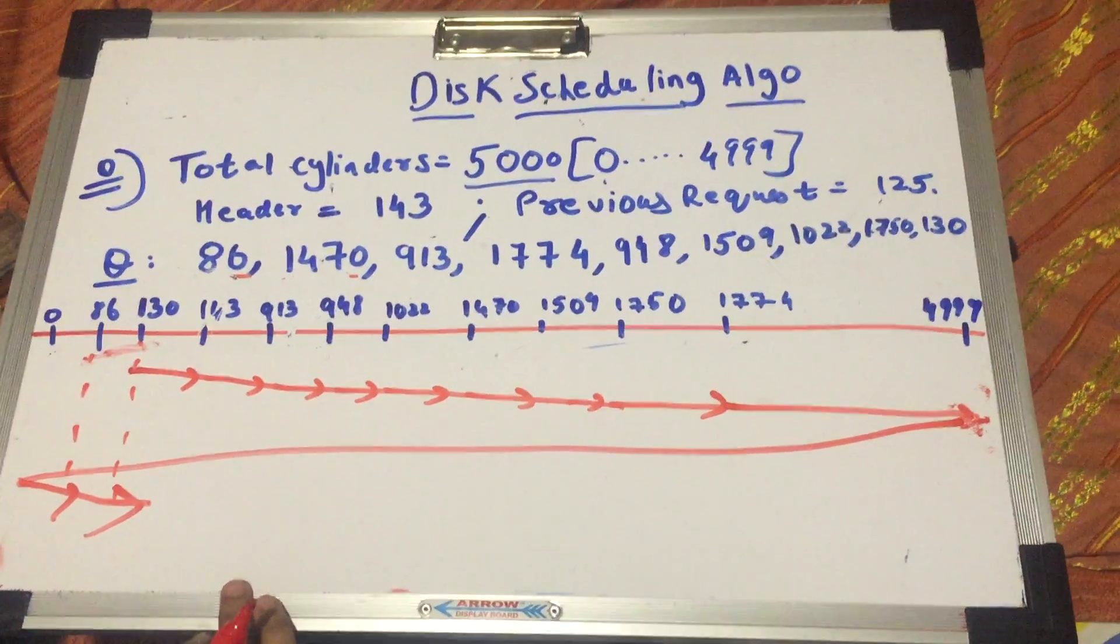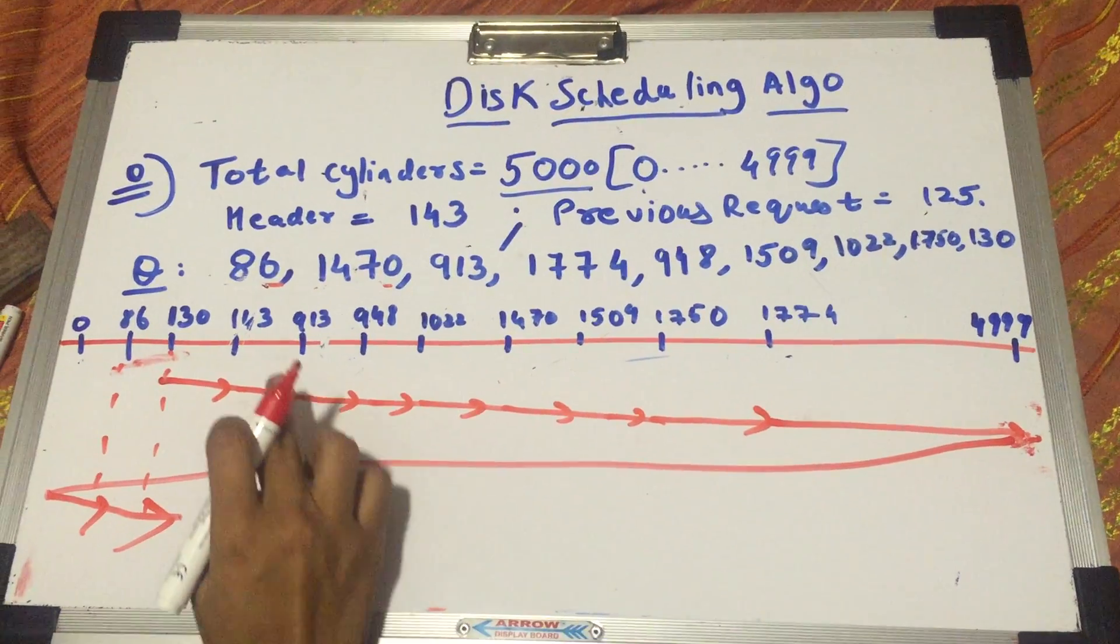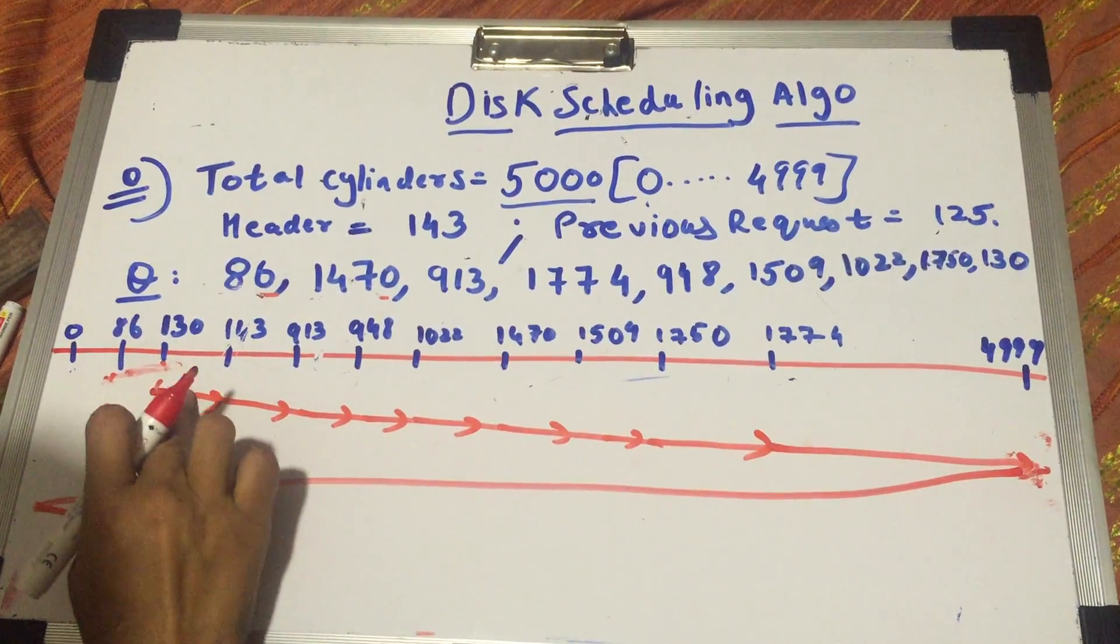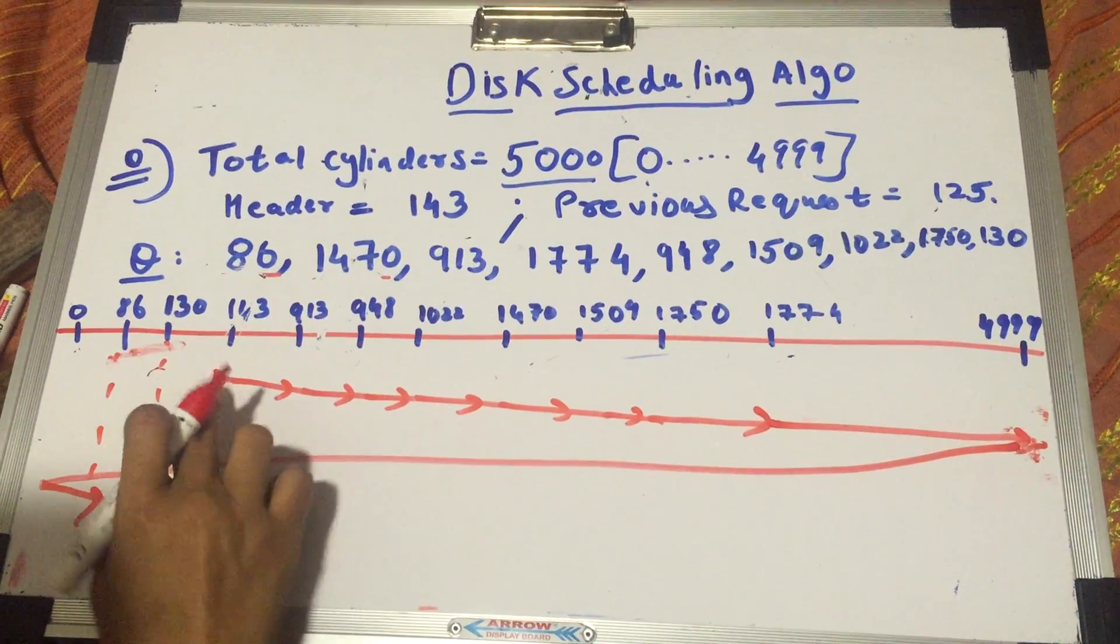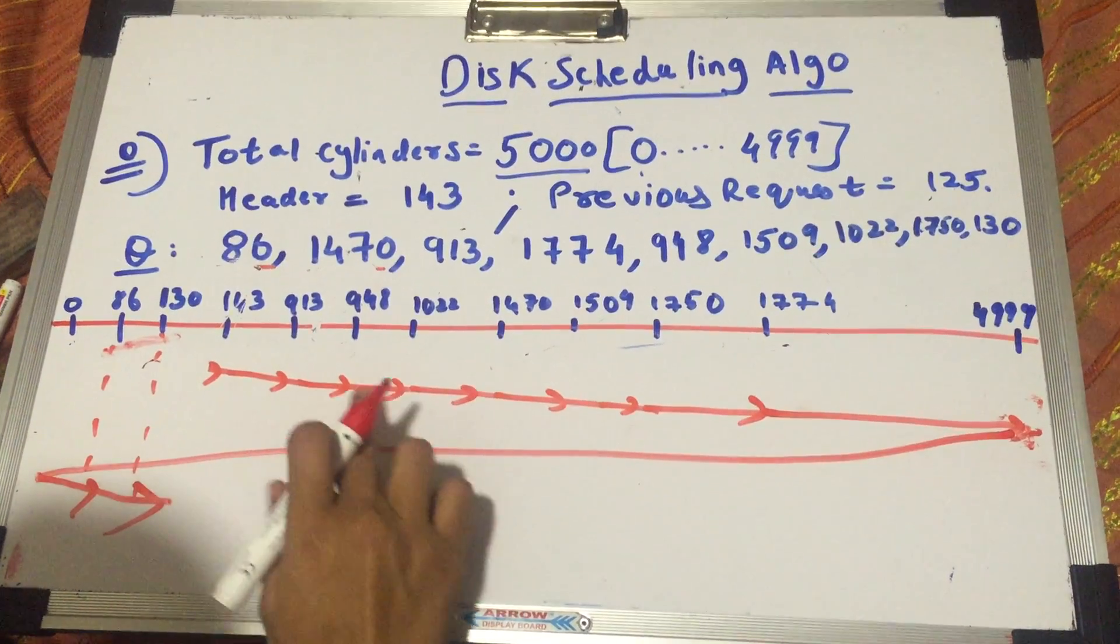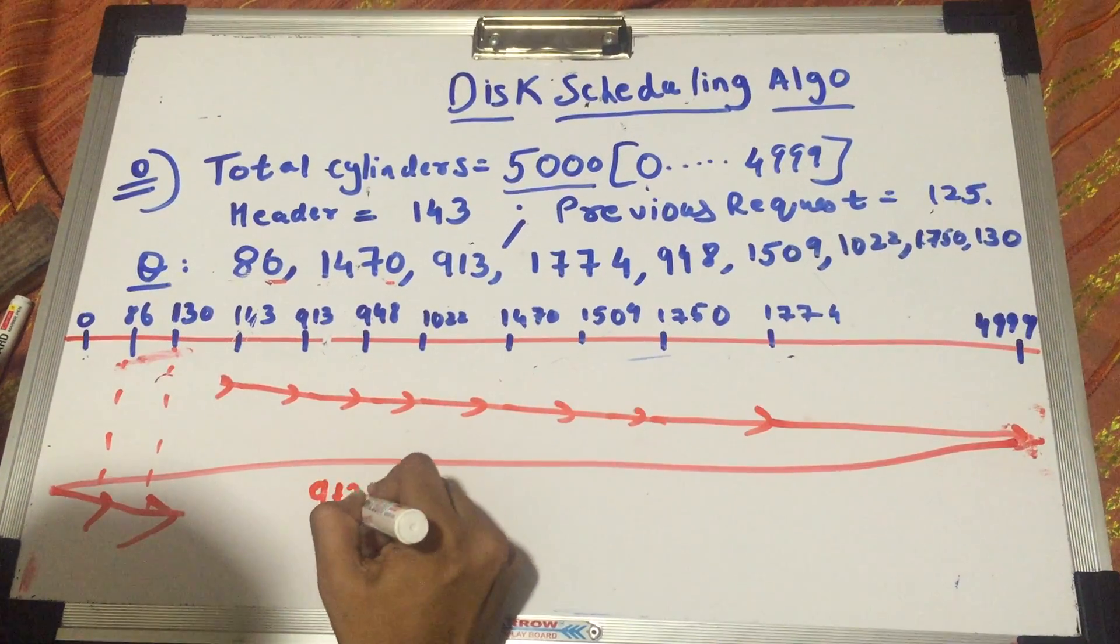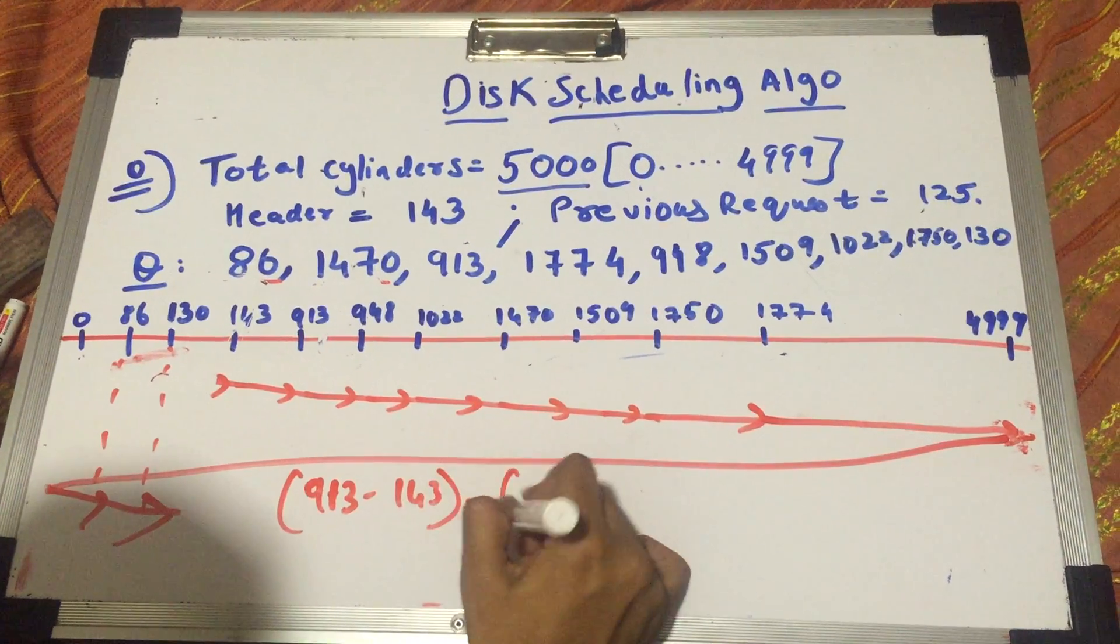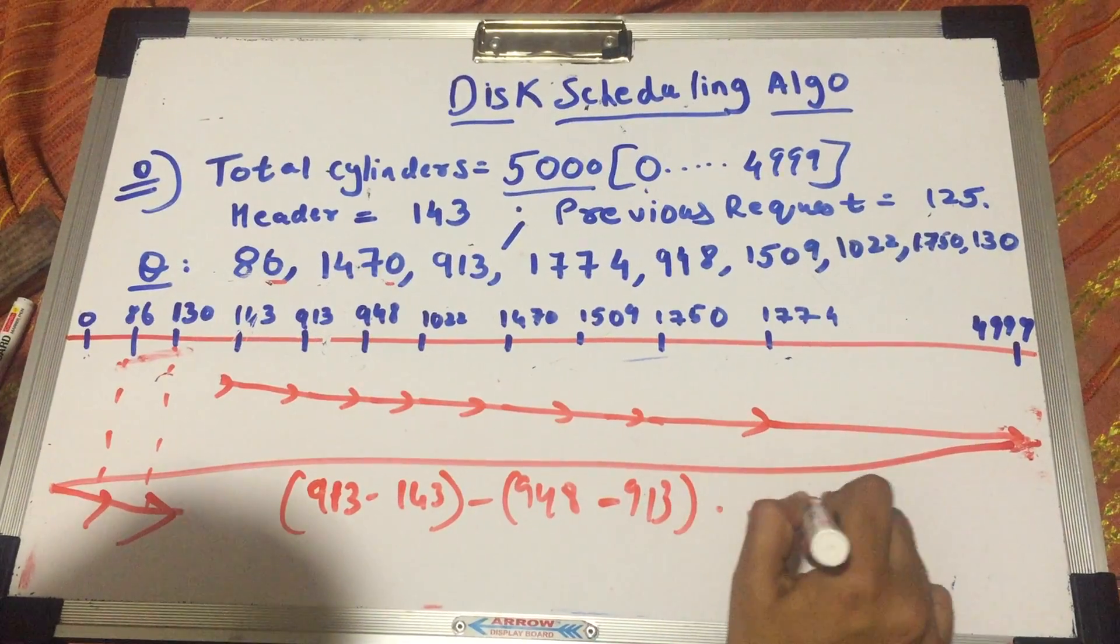Now, how do we calculate the total seek time of C-SCAN? Initially, that's easy. It starts at 143. The header is at 143. So 143, then 913, 948 and so on. You do 913 minus 143, then 948 minus 913 and it goes on.